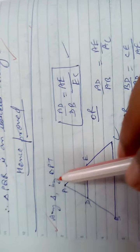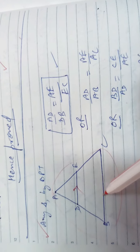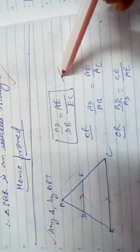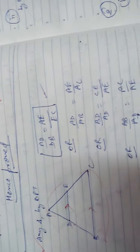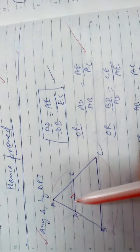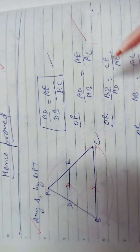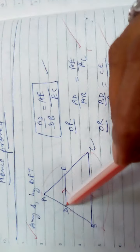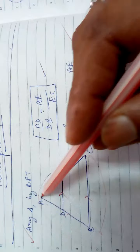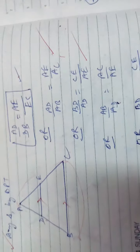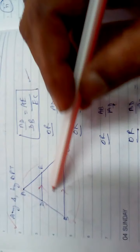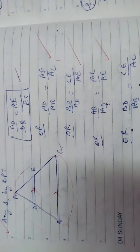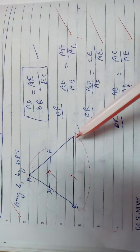For any triangle with DE parallel to BC, the main BPT gives AD/DB = AE/EC. As proved in Example 1, AD/AB = AE/AC can also be used as BPT. Other equivalent forms include: BD/AD = CE/AE; AB/AD = AC/AE; and BD/AB = CE/AC. All these are valid forms of BPT that you can use in calculations.